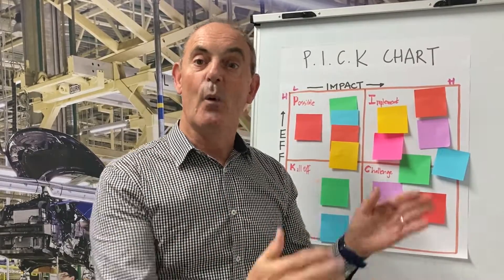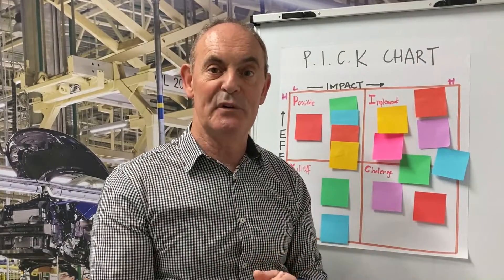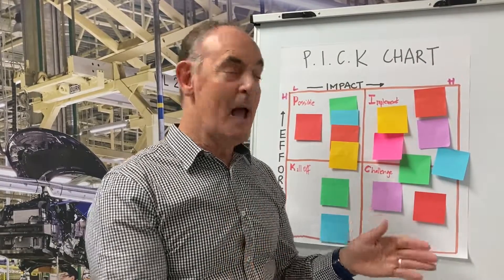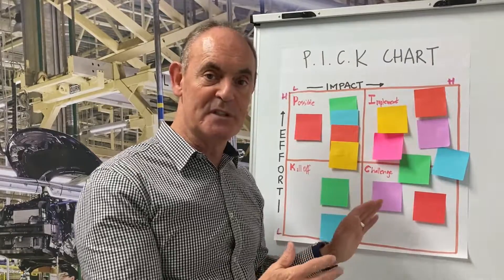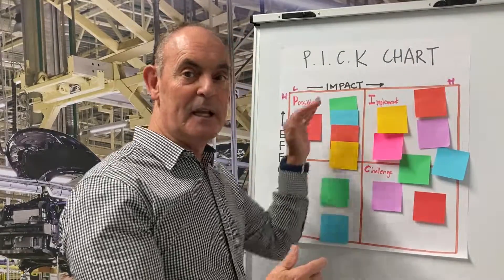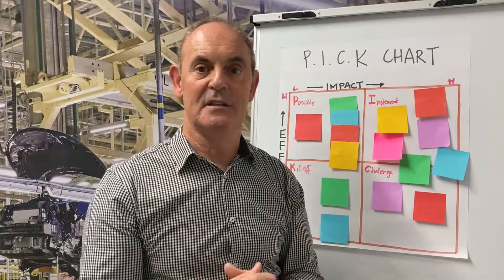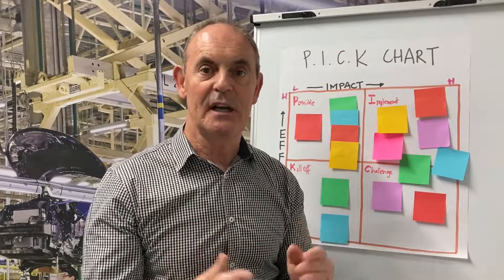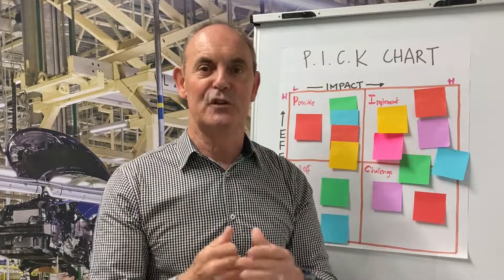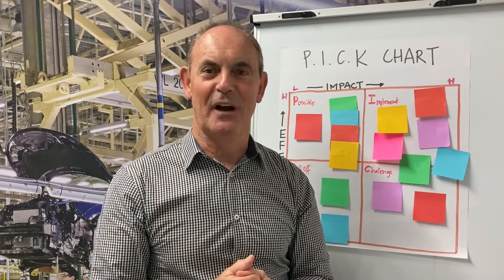So just recapping: a PICK Chart is a very simple but powerful tool where you can take a series of brainstormed ideas, place them into a four-quadrant effort-impact chart to arrive at the best prioritized ideas, create actions, and follow them through to a solution. I hope this has been very helpful, and thank you for joining me on this edition of Lean Bytes.